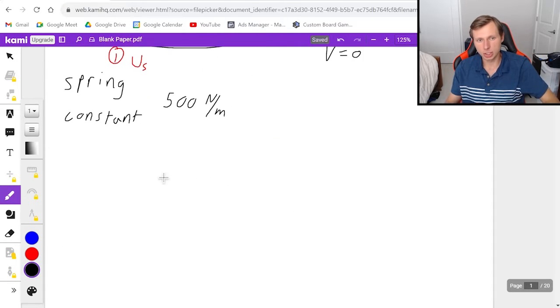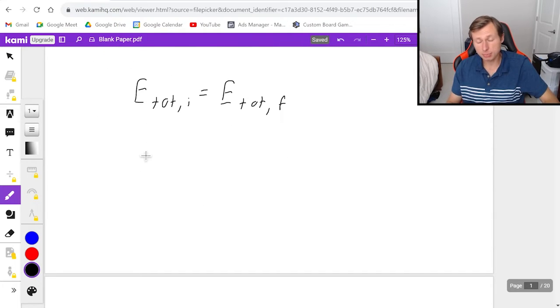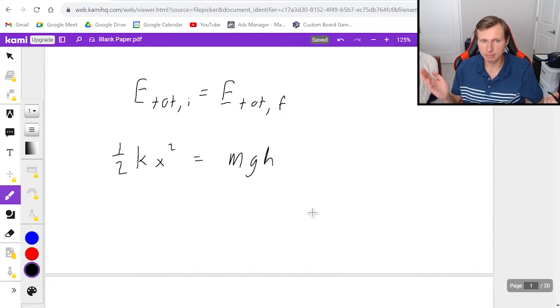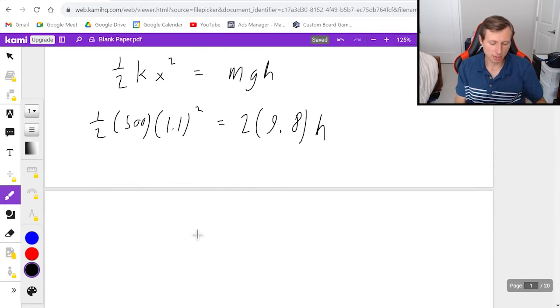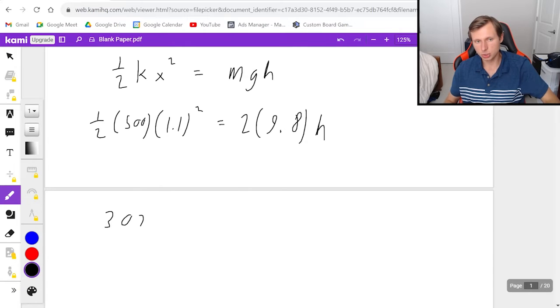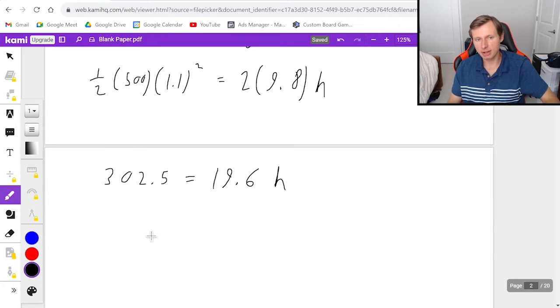And with that I can go to my equation which says E total initial is equal to E total final. At E total initial that's only spring potential energy. That's going to be one half k x squared. At the final it's all gravitational potential energy. So it's mgh. And then from here I just got to plug in my variables. The k is 500, x is 1.1 and that's squared. And then that's going to equal the mass which we said was 2 times 9.8 times the height.